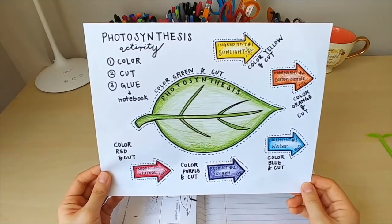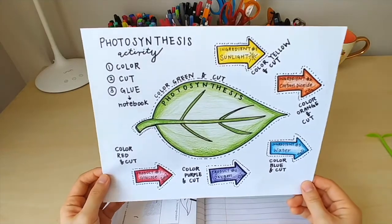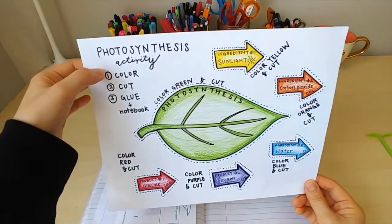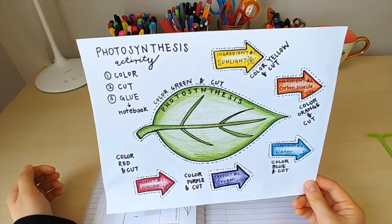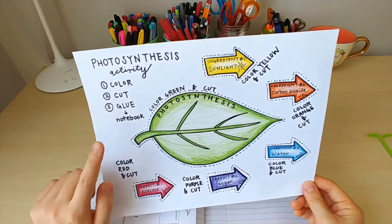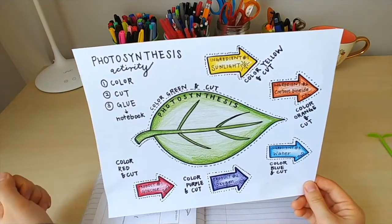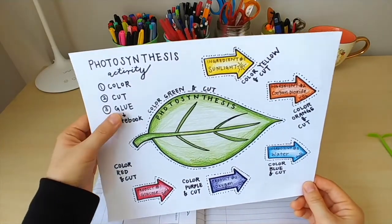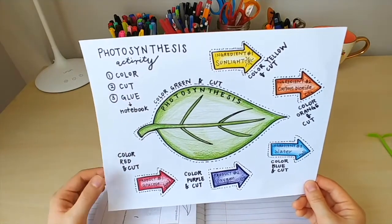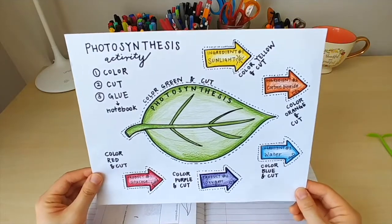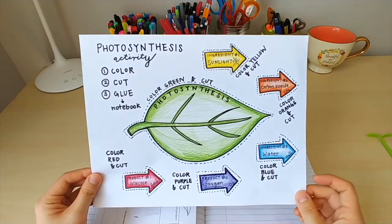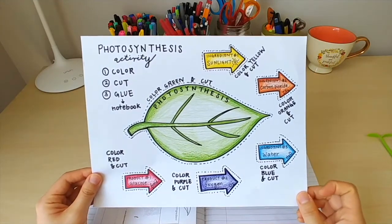For today's photosynthesis activity there are three simple steps: number one, color; number two, cut; and number three, we are going to glue these pieces into our notebook so that they represent a model of photosynthesis.